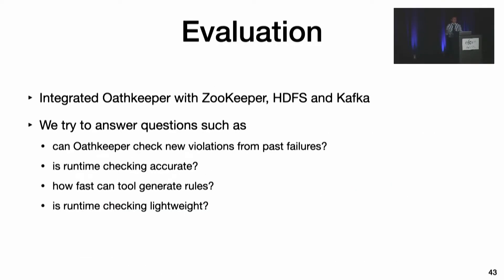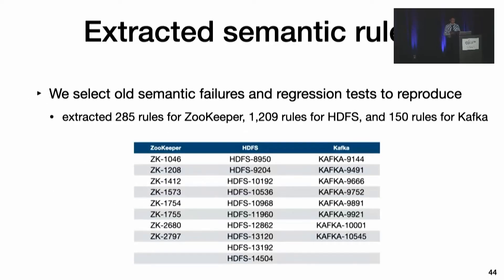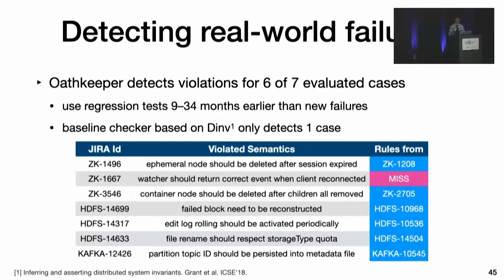We have integrated OathKeeper with ZooKeeper, HDFS, and Kafka. Our evaluation answers questions regarding detection effectiveness, accuracy, and others. OathKeeper requires old semantic failures and associated regression tests to extract semantic rules. We selected several tests for each system covering many important functionalities, and in total OathKeeper extracted 1,644 rules. To measure whether the inferred rules are useful to catch new semantic failures, we reproduced seven new bugs reported by developers. These bugs violate related semantics from the old cases but with different root causes. With the inferred rules, OathKeeper detects a violation for six of them.